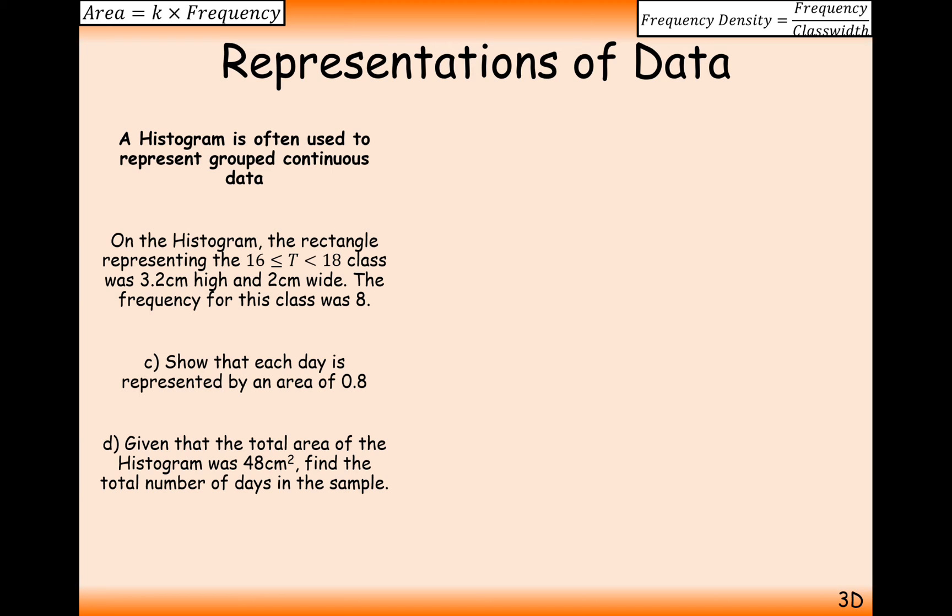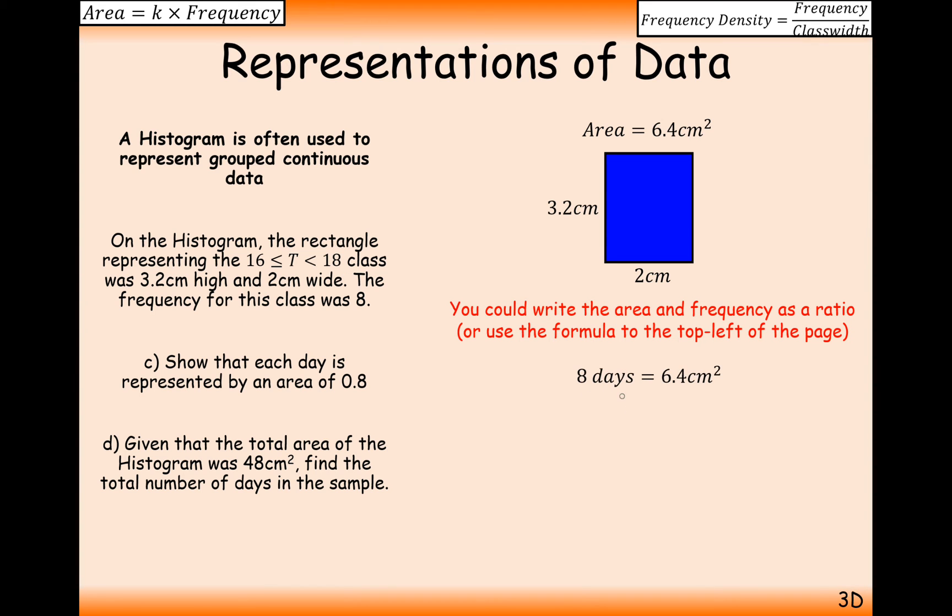Continuing on the same question here. On the histogram, the rectangle represented from 16 to 18 class was 3.2 high and 2 centimeters wide. The frequency of this class was 8. Show that each day is represented by an area of 0.8. So what we have here, if we look at the bar here, is a height of 3.2, a base of 2 centimeters. And this gives us an area of 6.4 centimeters squared. And we know that this corresponds to a frequency of 8. So we know that 8 times some value gives 6.4. So divide through by 8, and what you'll get is the value for 1 day, which is equal to 0.8 centimeters squared.